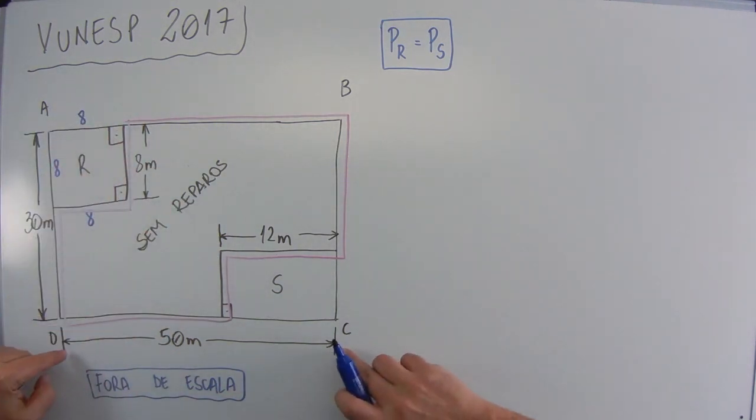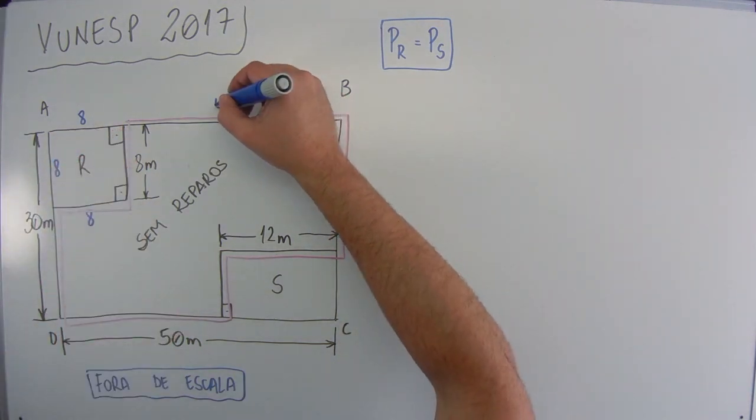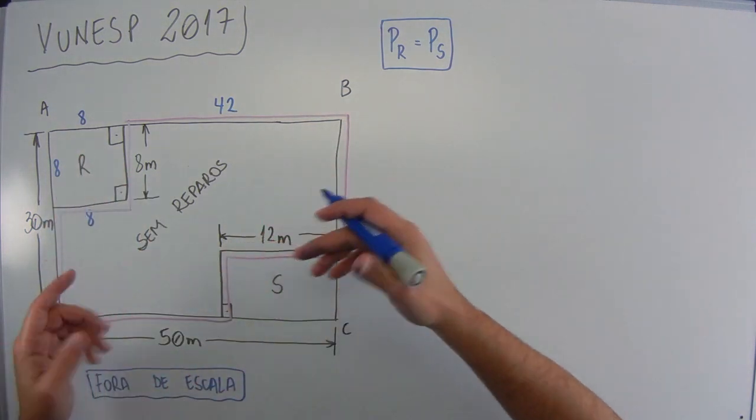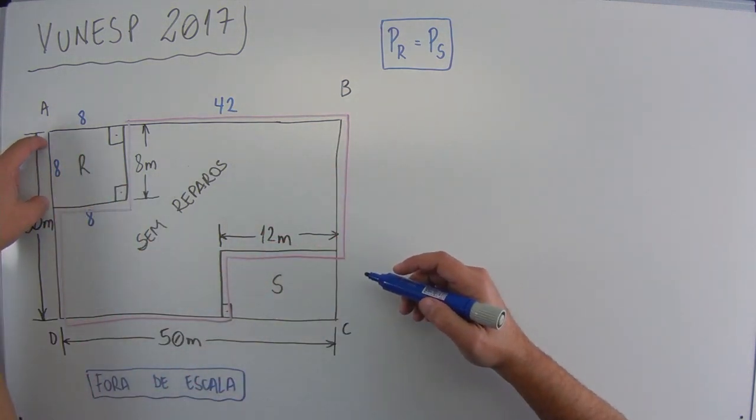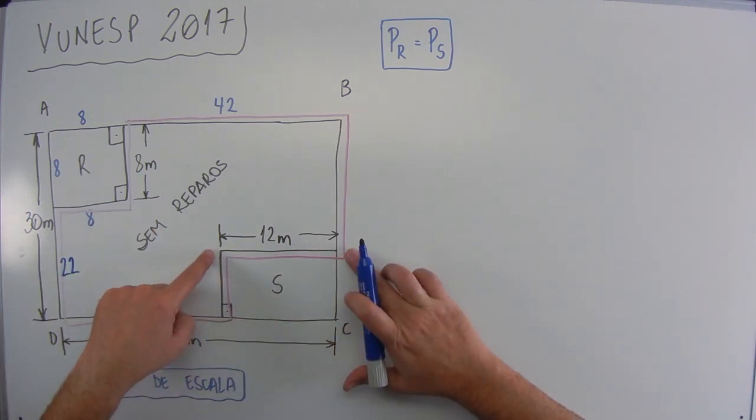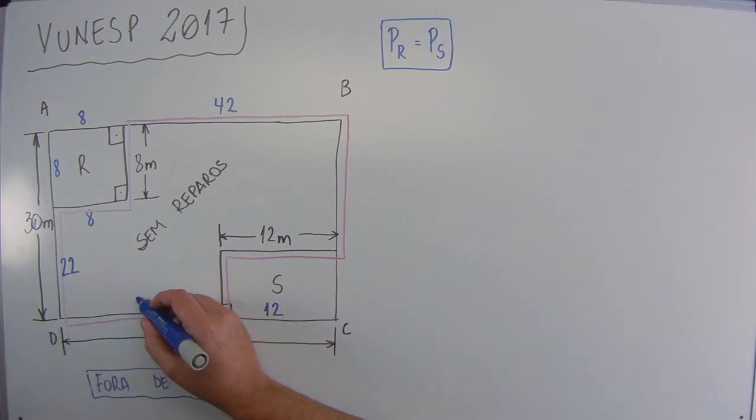Então vamos ver aqui. Aqui tem 8, aqui é 50, esse lado inteiro é 50. Se aqui já tem 8, aqui é 42. A gente só está usando o que a gente tem com o que foi dado. Esse lado vale 8. Se aqui são 30, aqui é 22. Aqui é 12, aqui também é 12. Se aqui já tem 12 e o total é 50, aqui é 38.